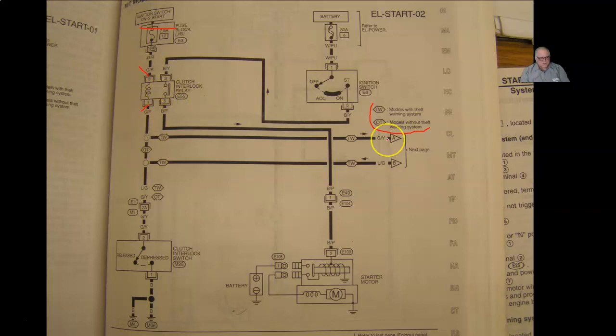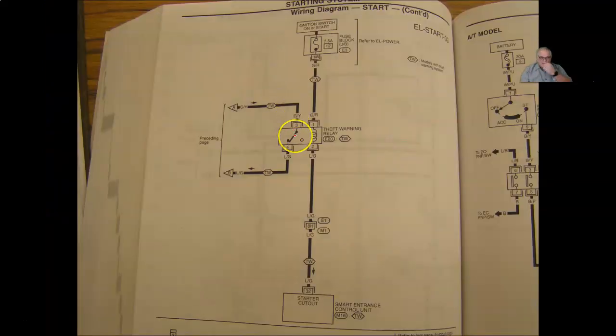If we have a vehicle with the theft warning system, this green wire of yellow stripe is still going to stay the green wire. Then we go to the next page, our A and B. This comes over to another relay, and notice on this relay, it is normally closed.